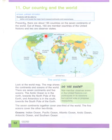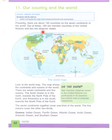There are 195 countries in the world and they are spread over the seven continents. Out of these, 193 are members of the United Nations and two are observer states.